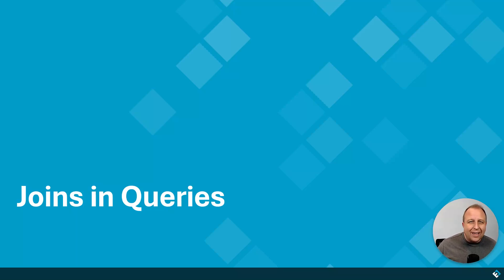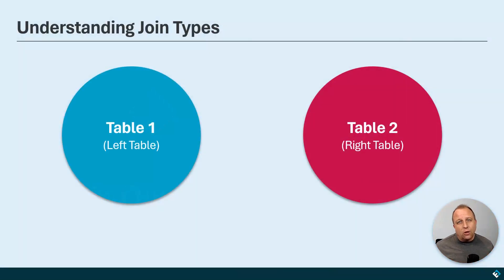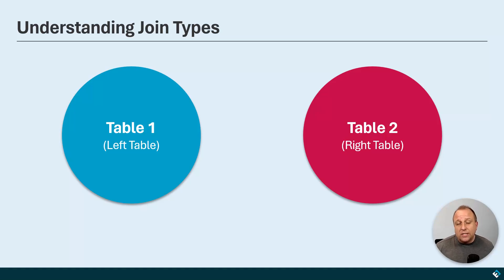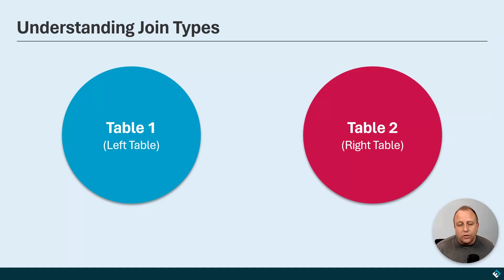So what does that actually mean? Well, when we talk about tables, there's always a left table and a right table. You don't have to worry too much about this — left just means first and right just means second. So anytime you see a left outer join or a right outer join, it has to do with the first table or the second table.